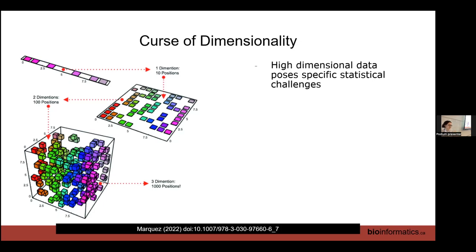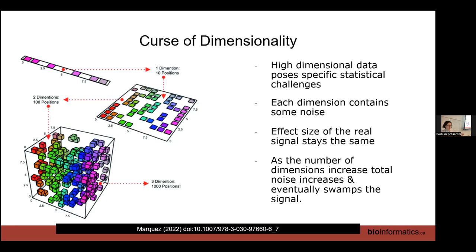Your data is going to get more and more spread out as you increase the number of dimensions. In single-cell RNA-seq, each gene is considered a dimension. So we have 20,000 dimensions. The other way to think about this is that each dimension, each gene, contains some amount of noise. But the effect size, the biological difference between our cells, stays about the same regardless of how many genes we're looking at. This means if we increase the number of dimensions, eventually that noise will swamp out the signal and make it really hard to find the biological truth.